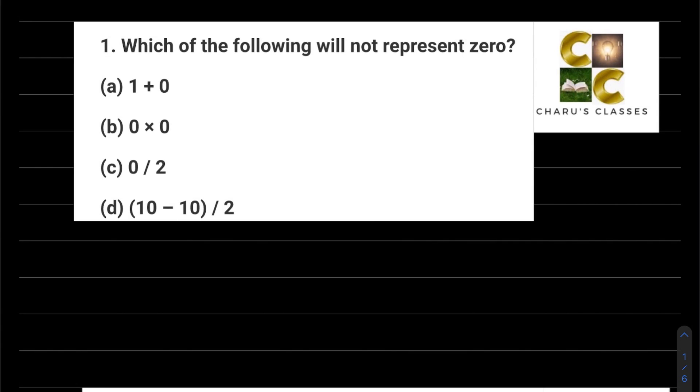Hello students, welcome to Charu's Classes. Today we are doing Exercise 2.3, Whole Numbers, Class 6. Question 1: Which of the following will not represent zero? Part a: 1 plus 0. When we add 0 to any number, that number remains the same. 0 is called additive identity, so 1 plus 0 is 1.